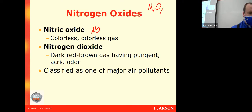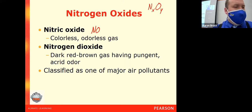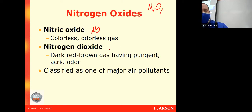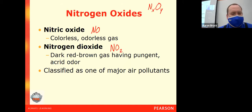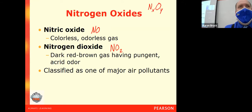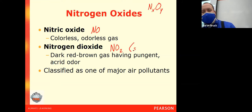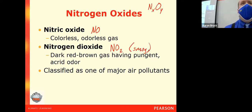Nitric oxide is a colorless, odorless gas. It is somewhat flammable as a gas. The far more common form of a nitrogen oxide is actually nitrogen dioxide, NO2. This is a dark brown gas. It has a very pungent odor to it. It is the primary component that gives smog its brownish color.